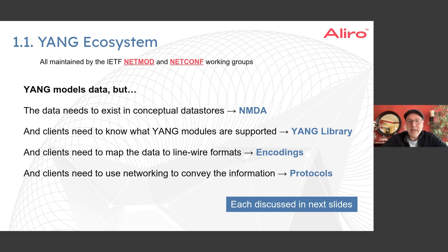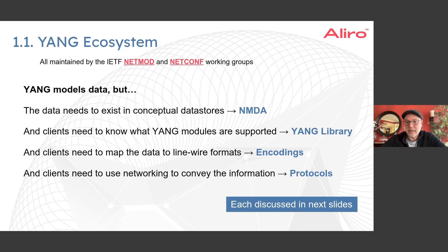Clients also need to know what YANG modules are supported by the servers they're connecting to — that discoverability mechanism is provided by YANG Library. Next, clients need to map data to wire formats, so there's a discussion of encodings: XML, JSON, or various binary encodings. Finally, clients need to use the network to convey information between orchestrators or controllers and the servers they're managing, hence the protocols. YANG as a data modeling language exists within this ecosystem, and the entire ecosystem is what's important.